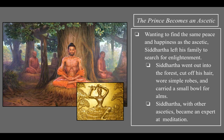Inspired to find the same peace, Siddhartha left his family — his wife and child — to search for enlightenment. His driver took him out to the forest, where he removed his royal robes, sandals, and jewels, cut off his hair, wore a simple robe, and carried a small bowl for alms — gifts of food from willing people. With other ascetics, Siddhartha became an expert at meditation, focusing the mind on ideas and on breathing.